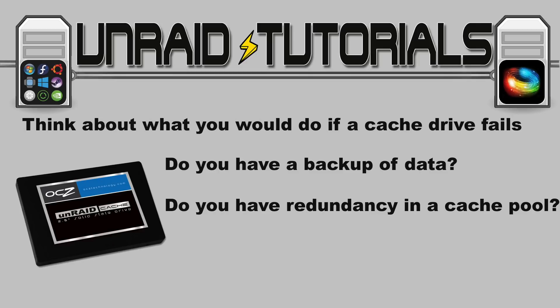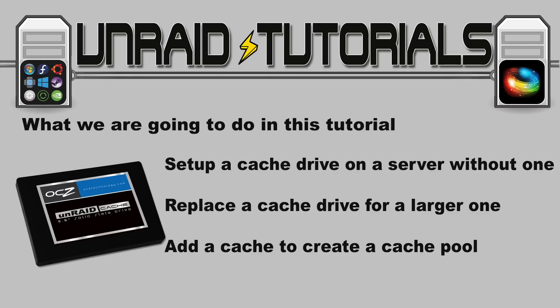With a cache drive we must think about what happens if the drive fails — do we have a backup, especially if we only have one cache drive? We can have more than one cache drive and set them up in a RAID configuration for either redundancy or striped for even more cache speed. In this tutorial we're going to: one, add a cache drive to an existing server that doesn't have one; two, replace a cache drive with a larger one; and three, add a second cache drive creating a cache pool in a BTRFS RAID configuration.